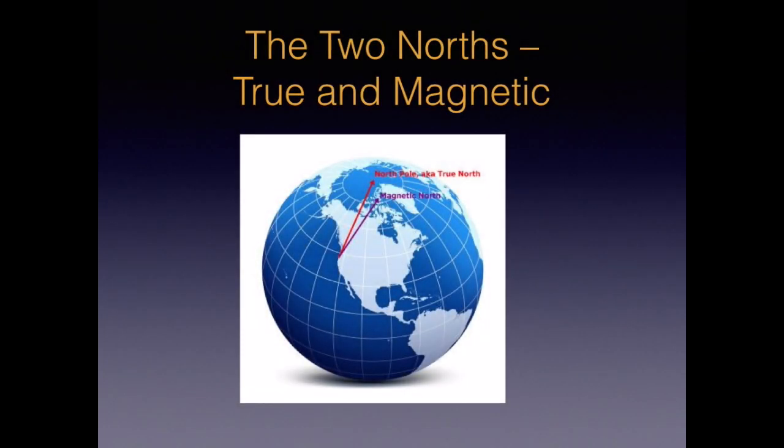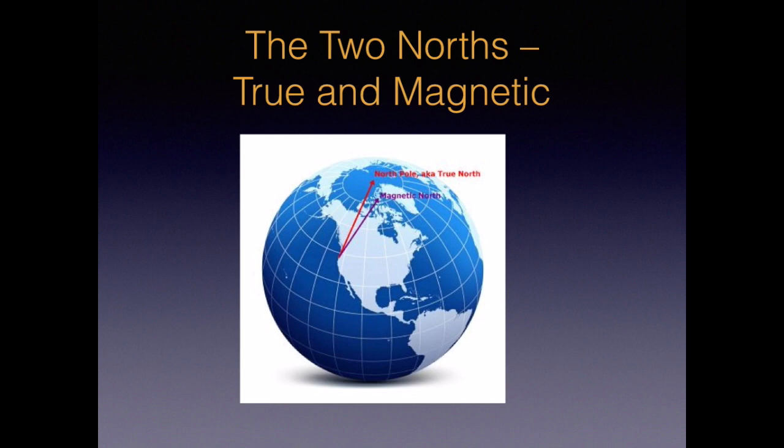To get a handle on declination, we need to understand that there are actually two different kinds of north that are important in navigation: true north and magnetic north. True north is also known as geographic north or the north pole — this is the axis around which the earth spins. When you see a north arrow on a map, it almost always points to true north.